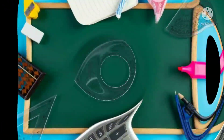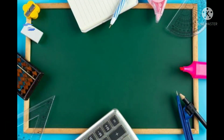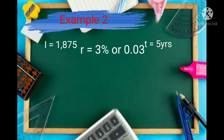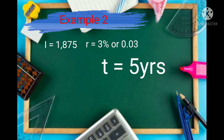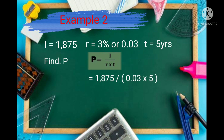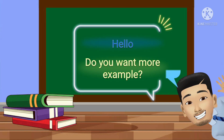The simple interest is equal to 13,500 pesos. Example number 2: Given simple interest = 1,875; rate = 3%; time = 5 years. Find the principal amount. Using the formula P = I ÷ (R × T): P = 1,875 ÷ (0.03 × 5), and the answer is P = 12,500 pesos.